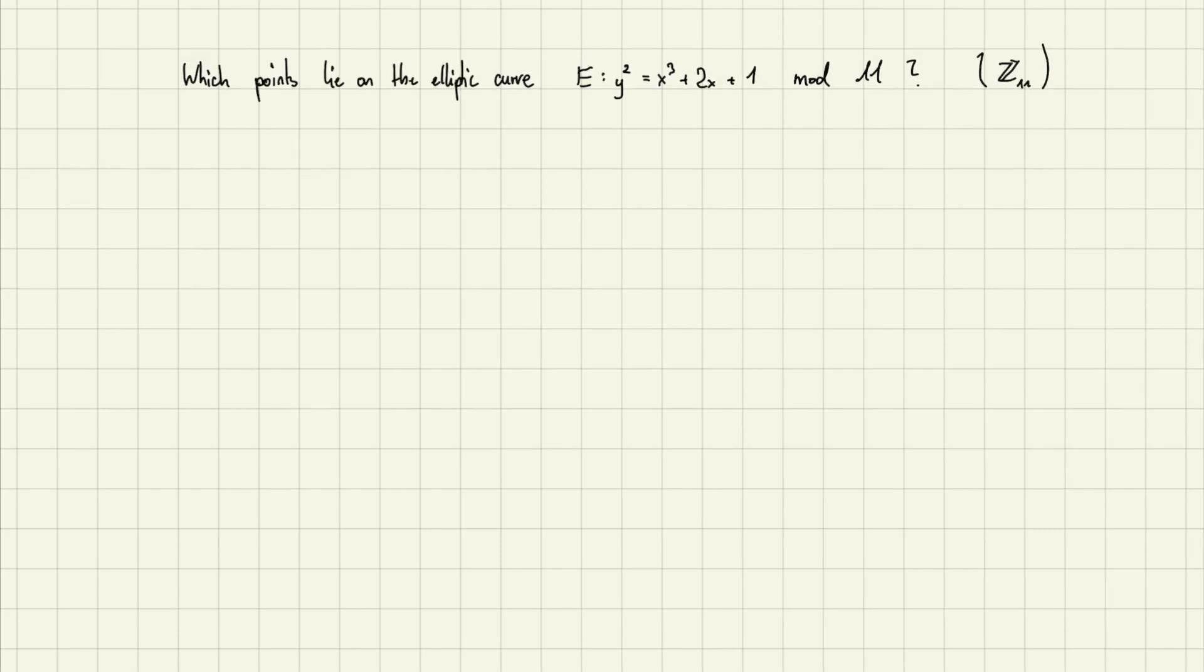This is actually very easy. We just have to make a list where we evaluate all the different points that there are. As we are in mod 11, there's just 11 possible values that we can try, but that we have to try.